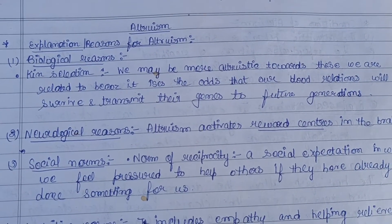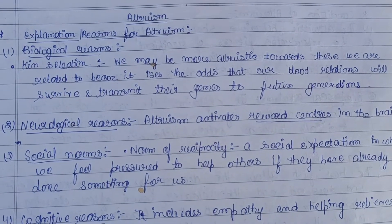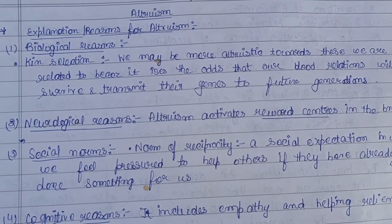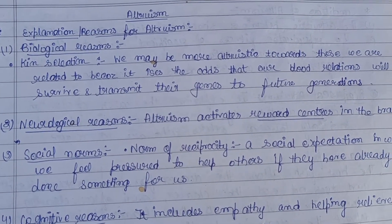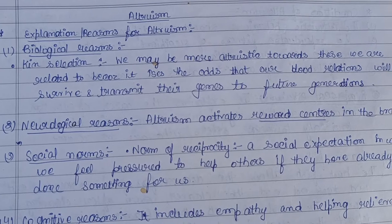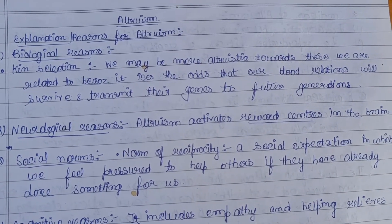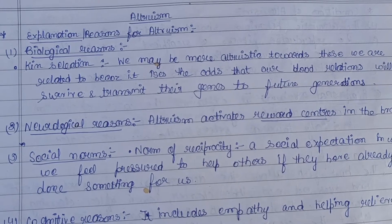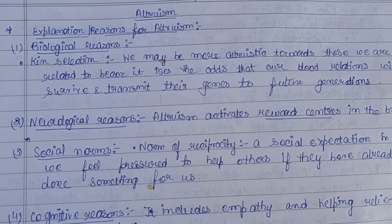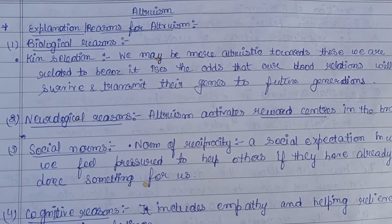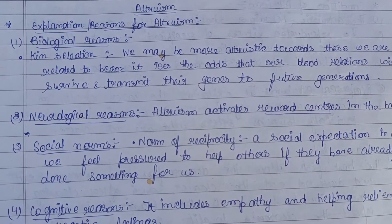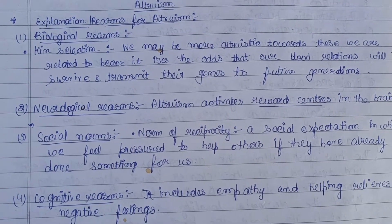Now, the explanation or reasons for altruism — that is, why altruism is performed at all. In philosophy, altruism means an act performed with a conscious intention to help another. But in the case of animals and in ethology, the altruism concept involves helping others without any conscious intention — that doesn't matter here.